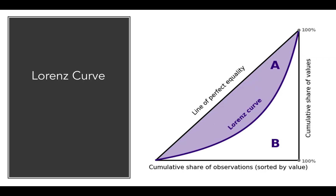Before diving into the Gini Coefficient, I need to introduce you to something called the Lorenz Curve. To trace out the Lorenz Curve, you basically want to do two things. First, sort your data from smallest to largest, and then you're going to plot out a line that represents the cumulative percentage of values seen so far. Each of those values corresponds to the cumulative percentage of observations we've seen so far versus the cumulative share of values we've seen so far.